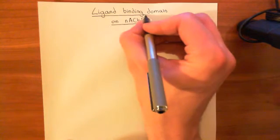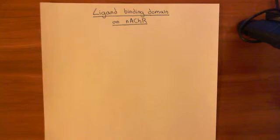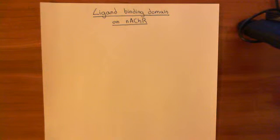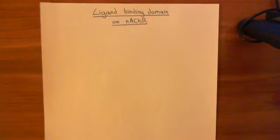Then I'm going to talk a little bit about the acetylcholine binding protein, because the structure of the ligand-binding domain of nicotinic acetylcholine receptors is very similar to the structure of the ligand-binding domain of the acetylcholine binding protein, which we find in molluscs. Most of the experiments done to determine the structure of the ligand-binding domain of the nicotinic acetylcholine receptor were actually done in the acetylcholine binding protein from molluscs, so knowing about the acetylcholine binding protein is important.